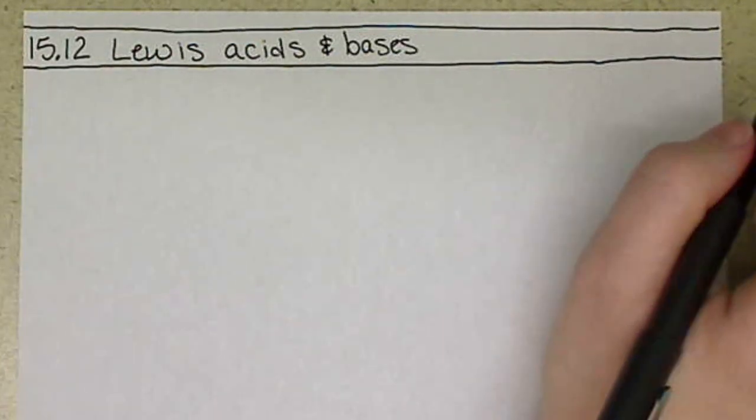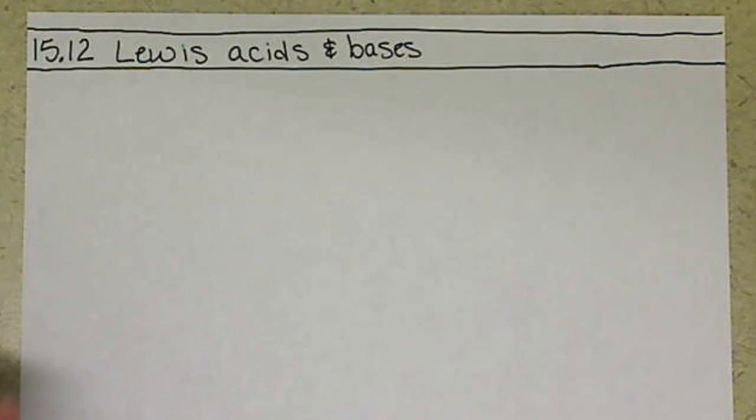So our Bronsted-Lowry definition of an acid or a base was where the proton was coming from and going to, so basically what was donating and what was accepting the proton, in other words, looking at the positive charge. Lewis acids and bases look at it as the positive charge doesn't really exist.